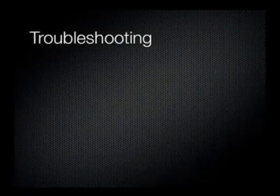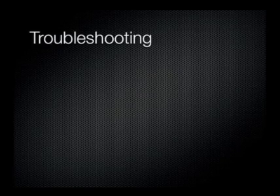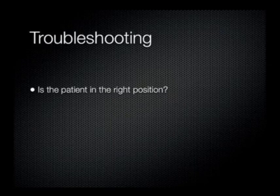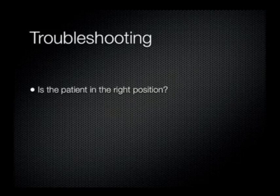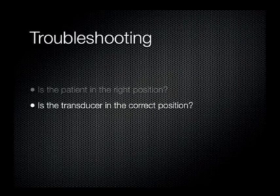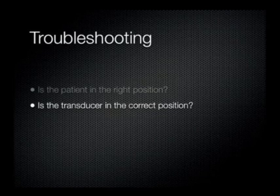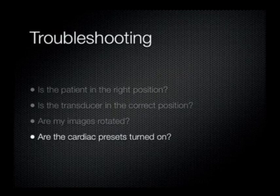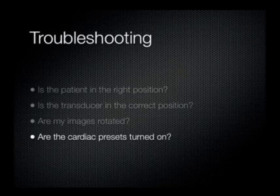When performing a cardiac exam, if you're having trouble obtaining correct images, keep these questions in mind. Is the patient in the correct position? Oftentimes, you will obtain a better image if you place the patient on his or her left side with the head of the bed elevated to about 20 to 30 degrees. Is the transducer in the correct position? Try sliding the transducer under and over the ribs to obtain a better acoustic window. Are my images rotated? Your transducer may be in the correct place, but the probe marker may not be. And if your images don't appear crisp, make sure you are on the cardiac presets on your ultrasound machine and not the abdominal presets.